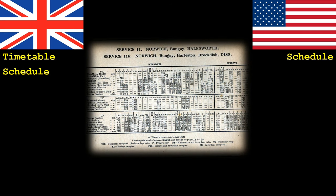Trains need to run to time and to help with this there is usually a timetable which tells passengers and staff where and when a certain train is supposed to be. In the UK we refer to a timetable simply as a timetable, though some people do like to call it a schedule. In America a timetable is known as a schedule, but for some reason they pronounce it 'schedule'.